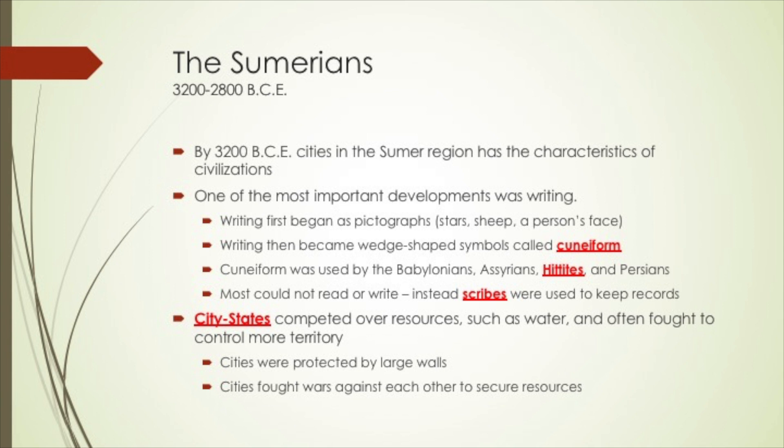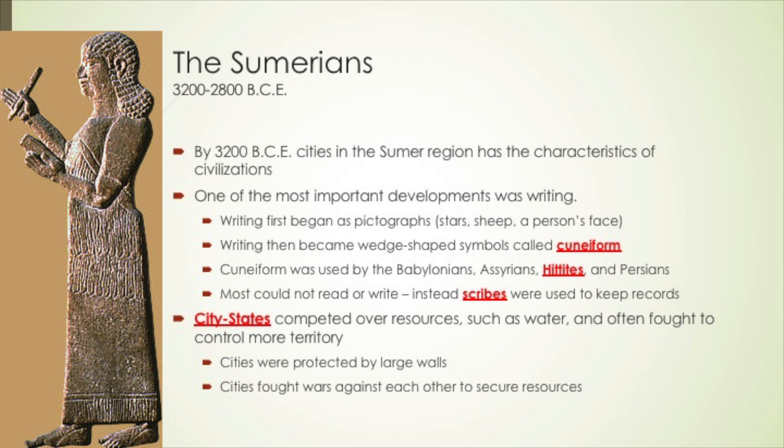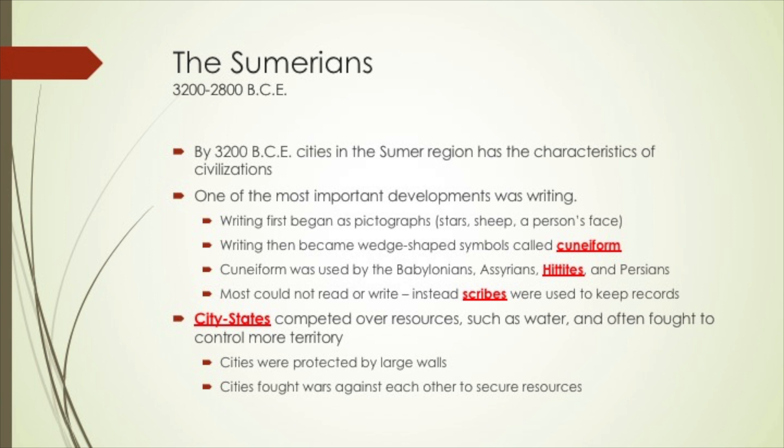Although the Sumerians invented the very first forms of writing, most people who lived in Sumeria were not able to read or write. Instead, they used scribes — individuals who went to school to learn how to write and read cuneiform — and these scribes kept the records of the civilization.